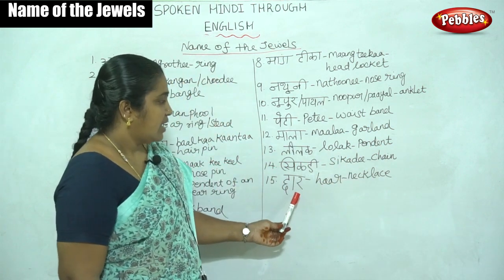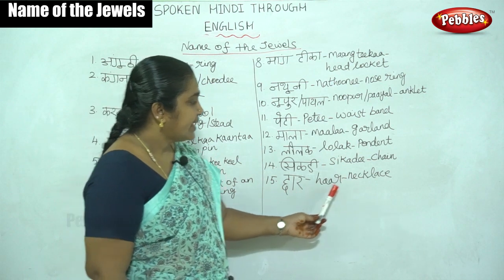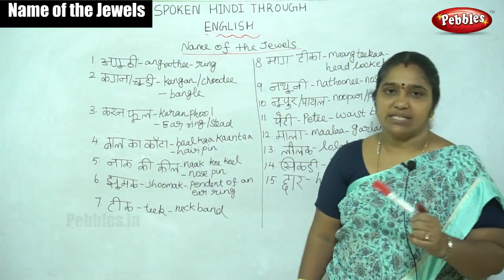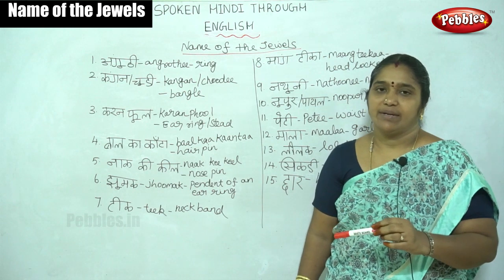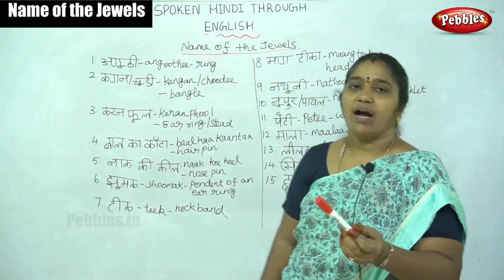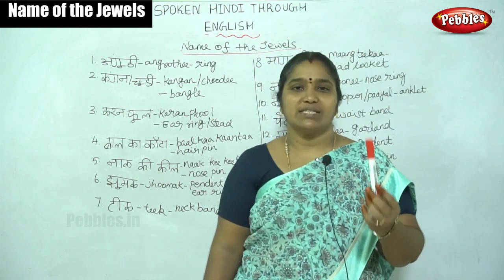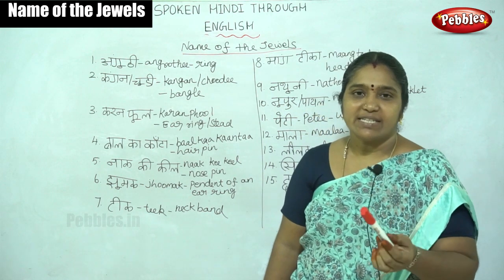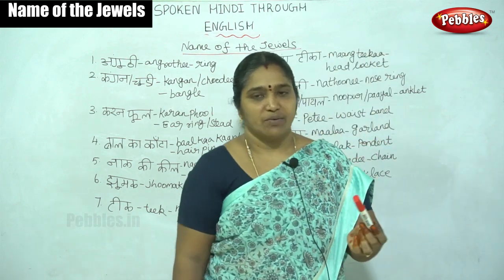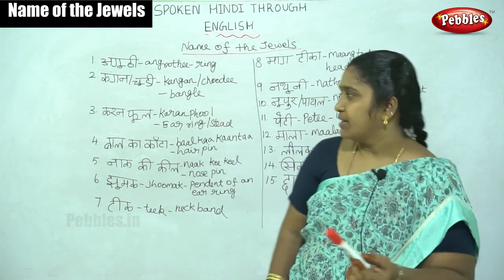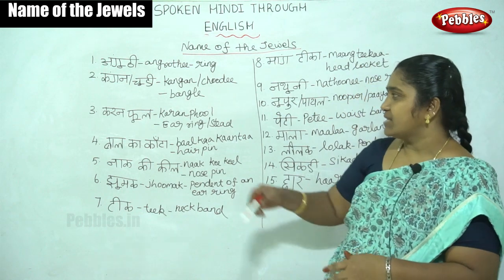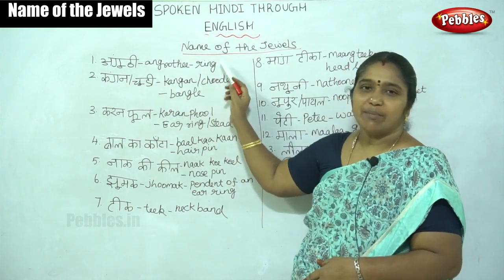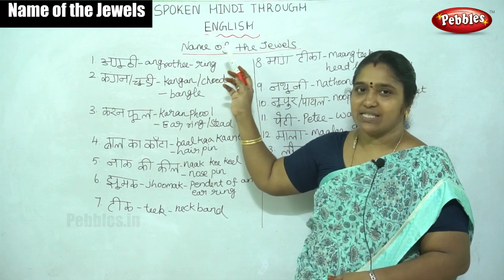Then Haar. Haar is necklace. Meri sona ki haar bahut achi hai — means my golden necklace is very beautiful. Then, to review, Anguti is ring, which is important in marriages.